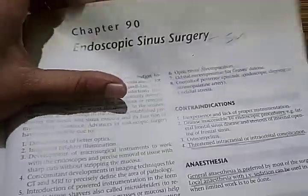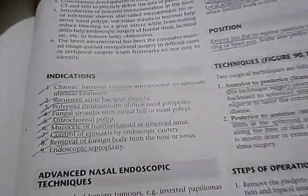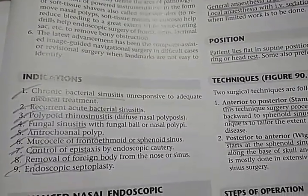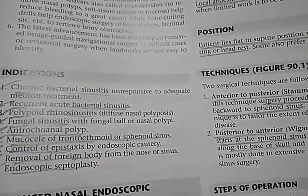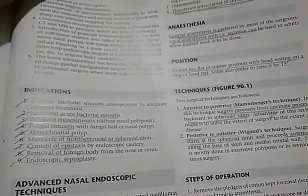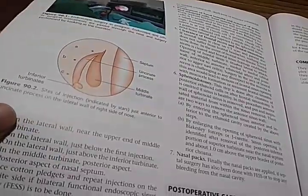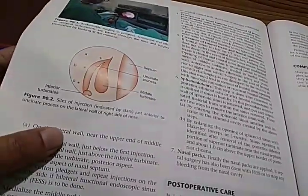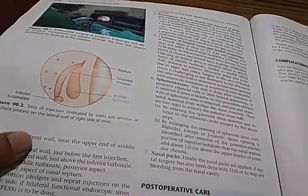Endoscopic sinus surgery is covered — this is very important. The indications include chronic bacterial sinusitis, epistaxis, foreign body, and septoplasty. Endoscopic surgery in progress is shown, including sites of injection just anterior to the uncinate process on the lateral wall of the right side of the nose.